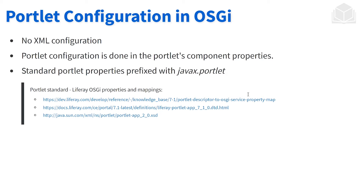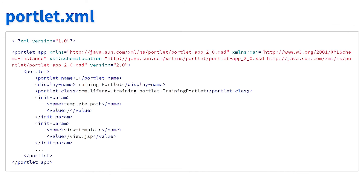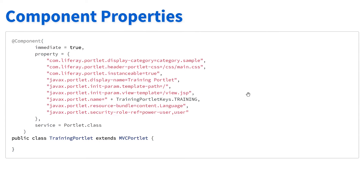We have a number of links referencing documentation if you have any questions about those properties. In the screenshot, we see a portlet.xml with things like portlet name, display name, and init parameters. Converting this into an OSGI portlet component, you'll see the javax.portlet display-name is set to 'training portlet' with those init parameters as well. So we can see the direct translation between what we do in portlet.xml and within the component annotation.